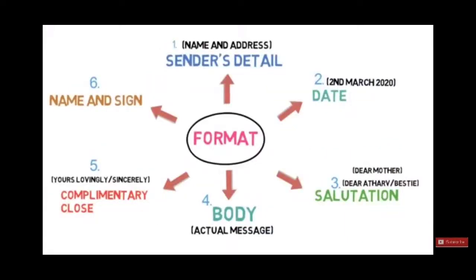Let's see the format of an informal letter. First, on the left hand side we have to write the sender's details. If you are writing the letter, you are the sender, so your address must be written. Then, leaving one line, you will write the date in expanded form — like today is 20th of February, so you will write 20th of February 2021.